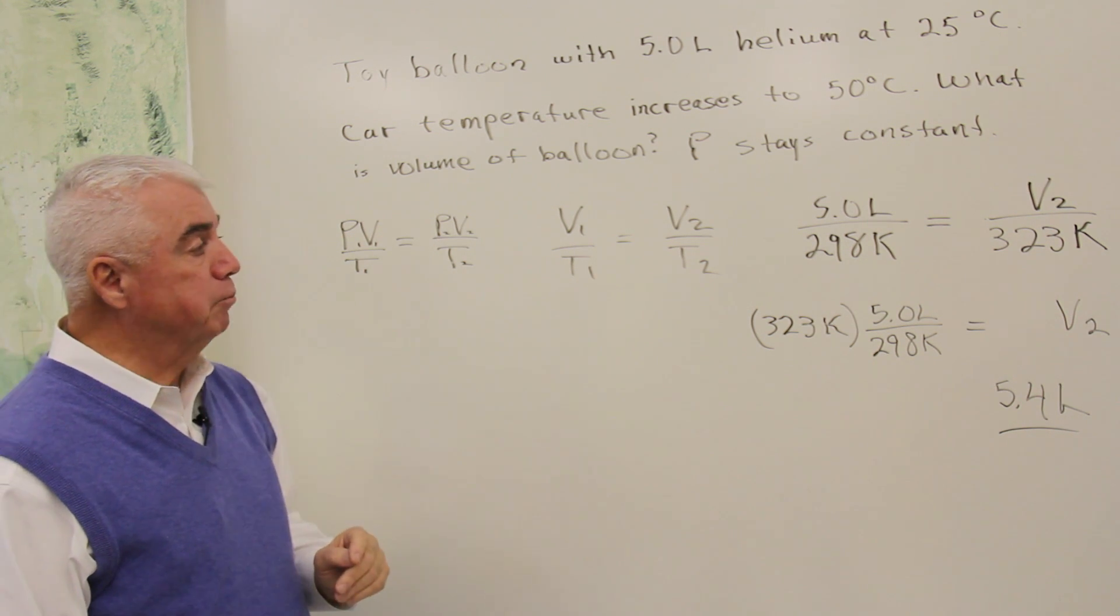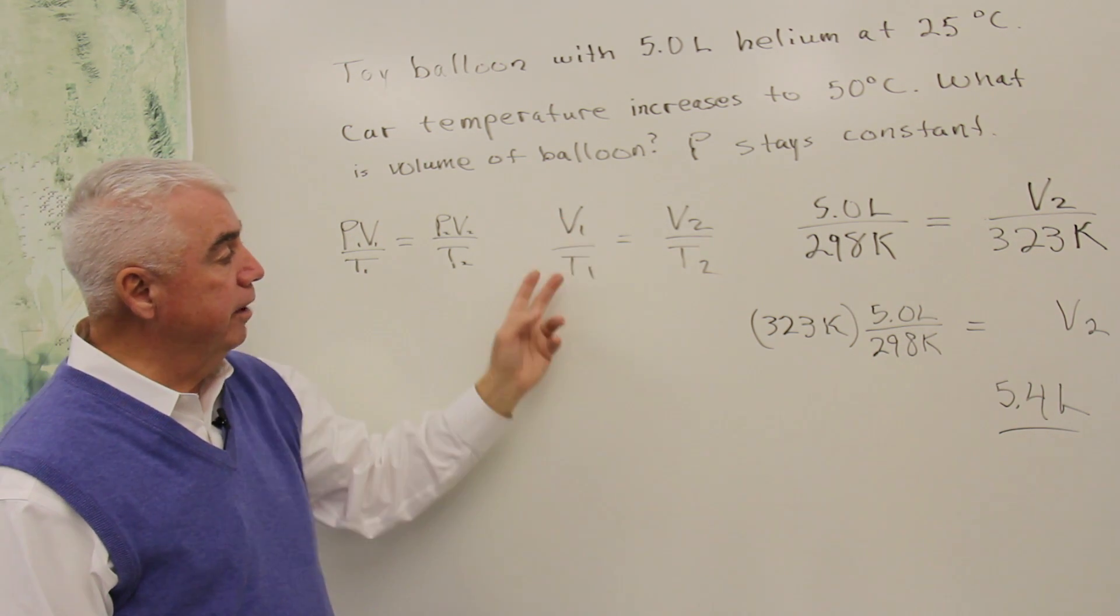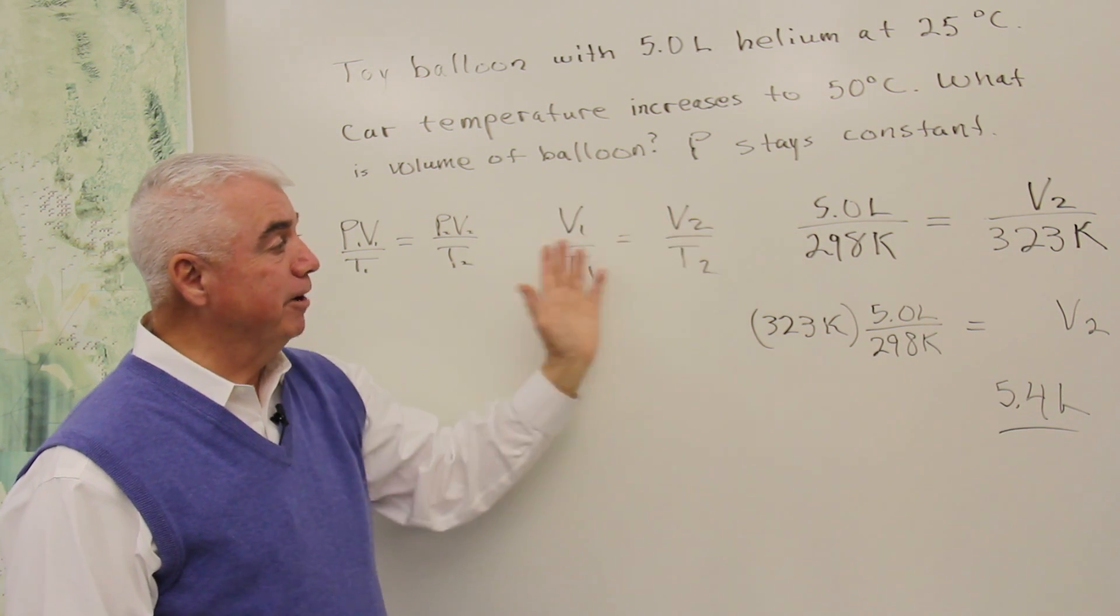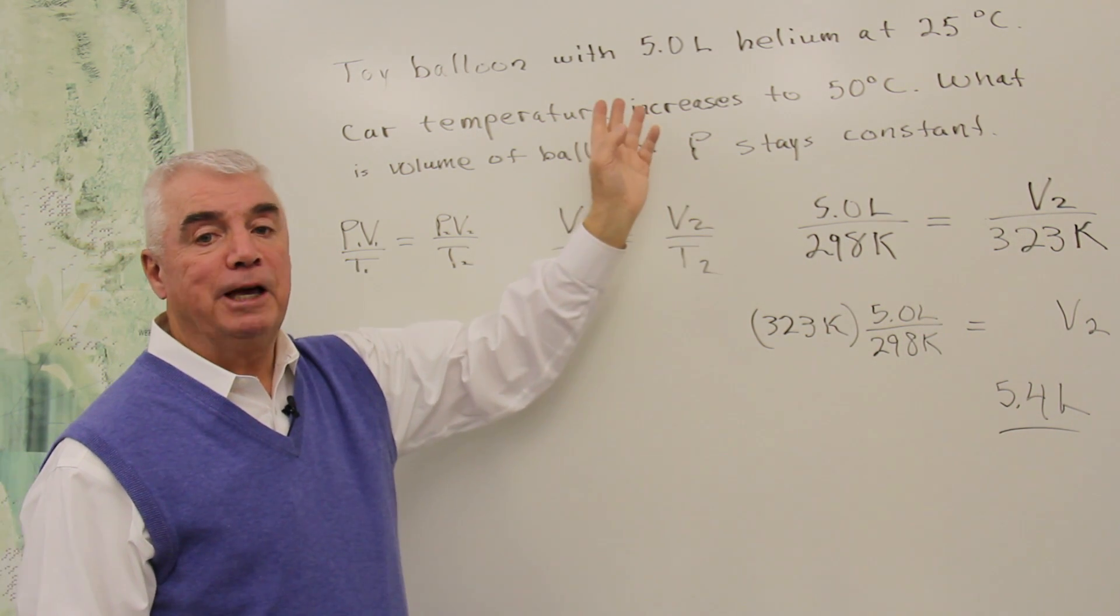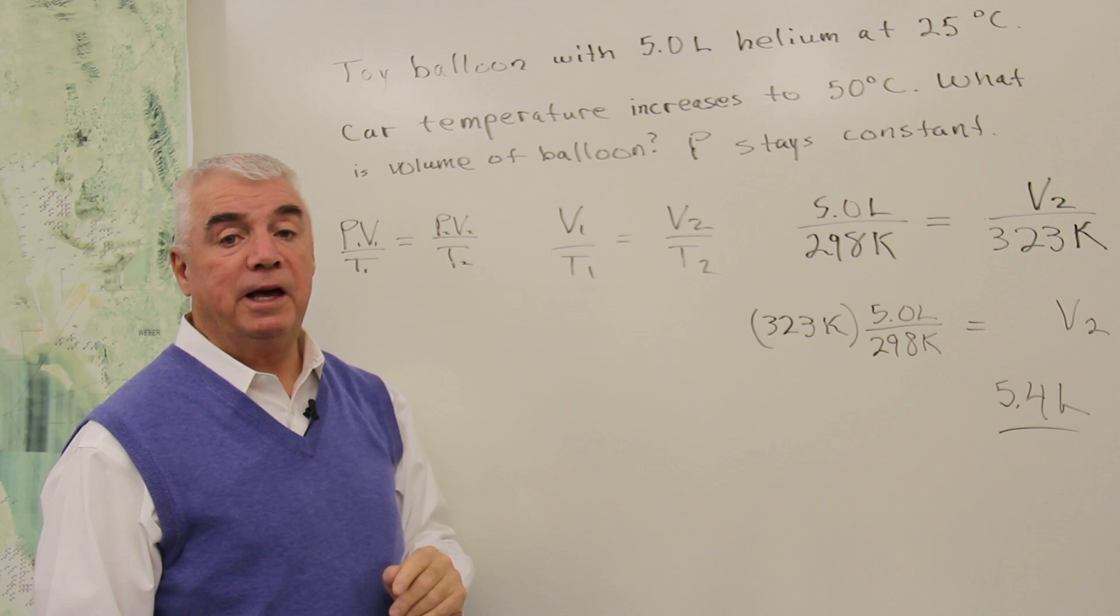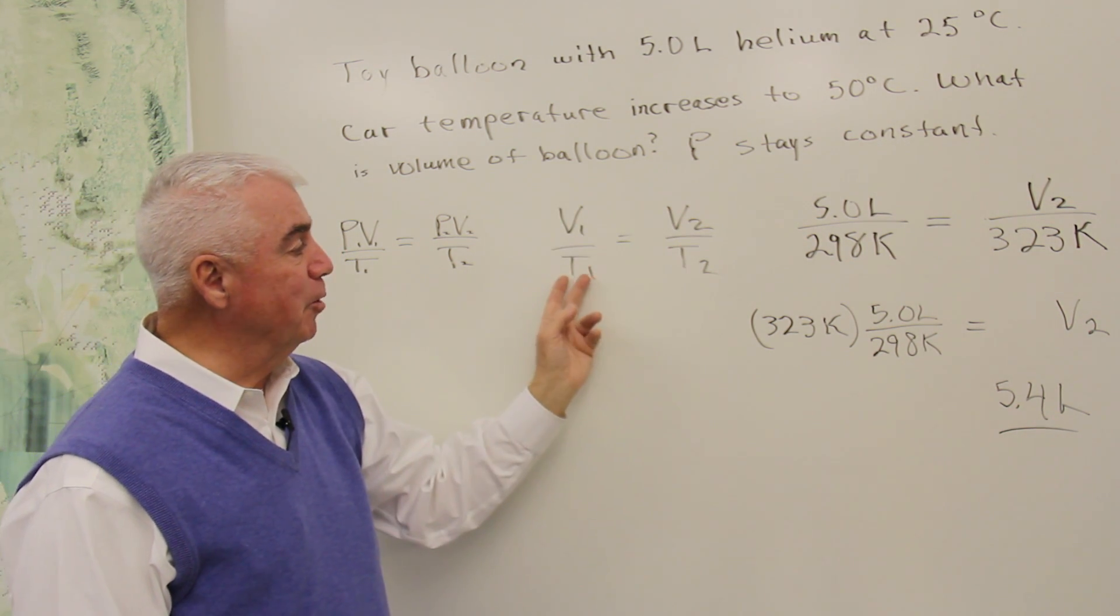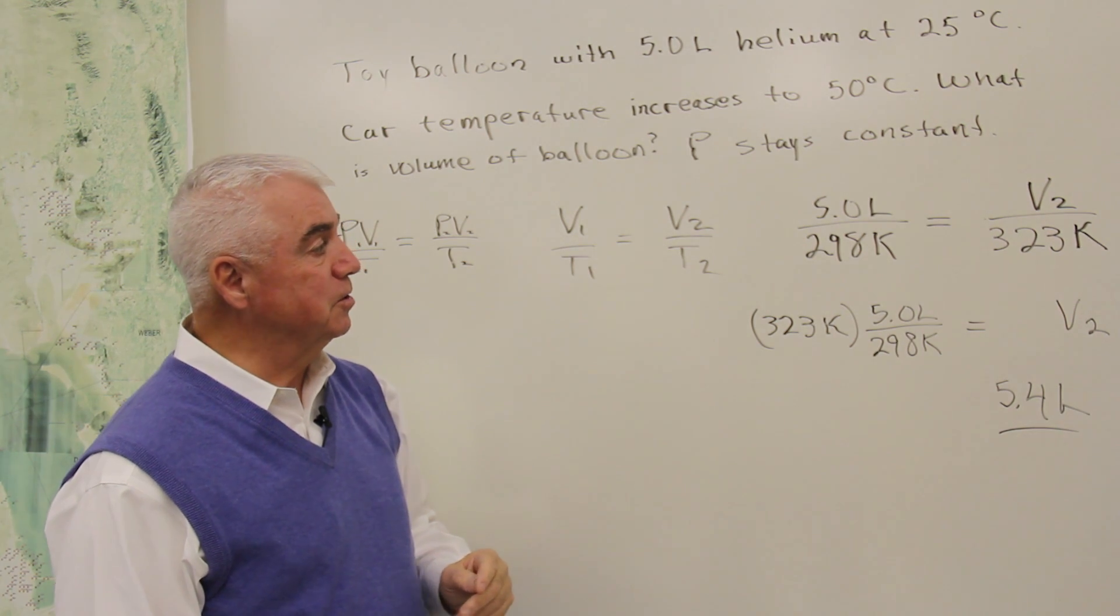So we'll eliminate pressure from the equation. We have V over T equals V over T. Four variables. We're given information on three of those. We'll be able to solve for the fourth. And the one thing we need to remember is that T must be in kelvins.